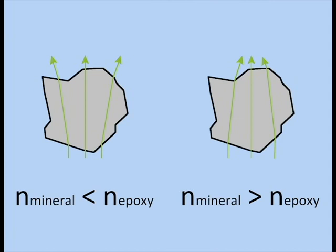The Becke line is the bright line observed around the grain boundaries of the mineral, only if its refractive index is different from the epoxy. If no grain boundaries can be seen, the refractive indices are assumed to be the same. The Becke line test is performed by lowering the stage and noting the apparent movement of the Becke line.